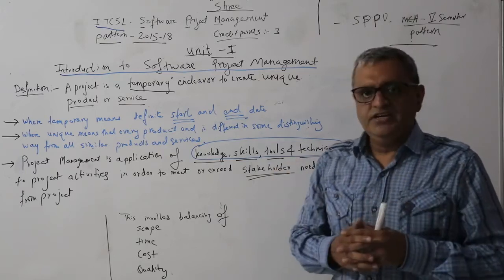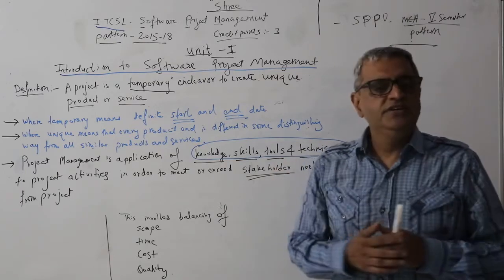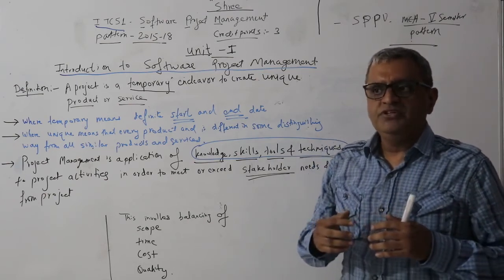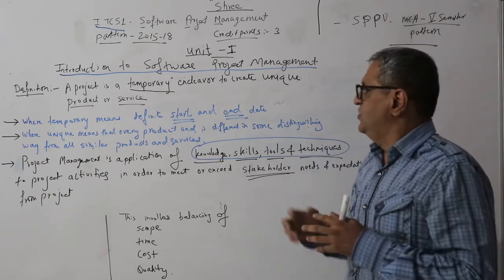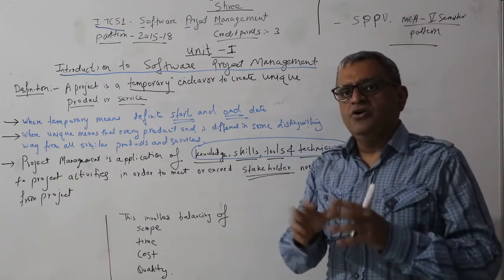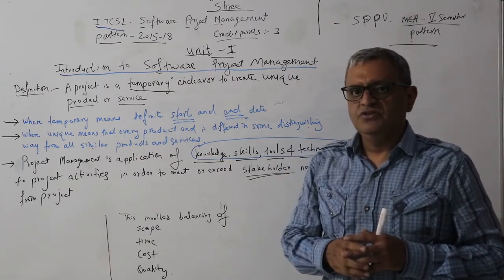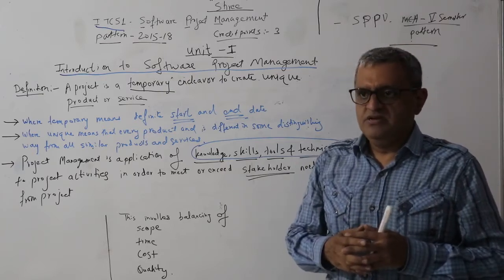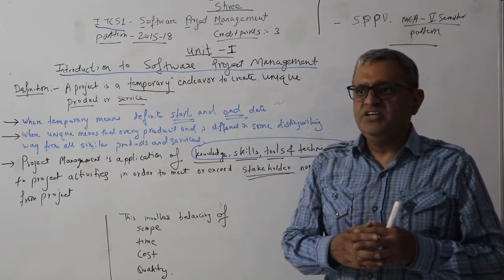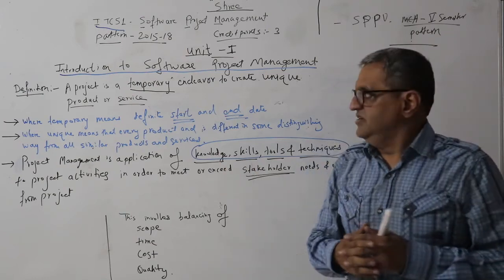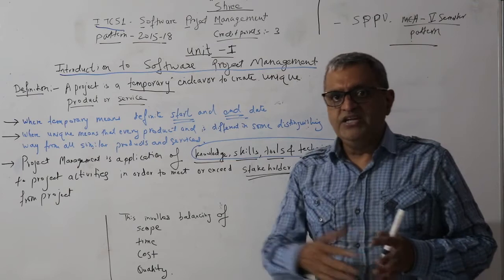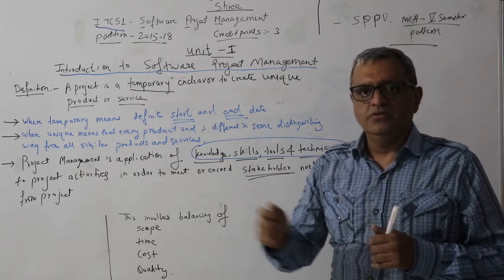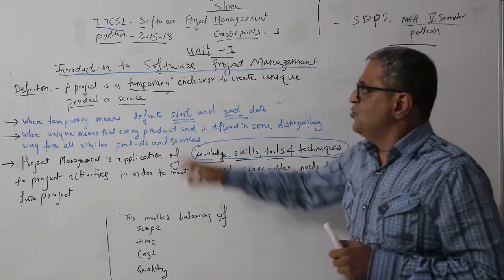A project is a temporary endeavor — endeavor here means aim — so I have a temporary aim to create a unique product or a service. My aim can be building a house, my aim can be building a multi-story mall. The outcome of my aim is a house.